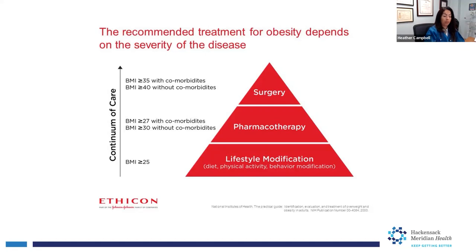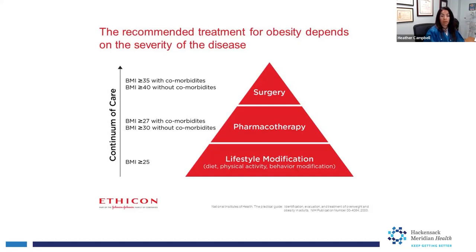Once you get a BMI over 35, you become a surgical candidate, specifically if you have comorbidities. When it comes to surgery, the comorbidities can be high blood pressure, diabetes, osteoarthritis, or heartburn — which is gastroesophageal reflux disease.